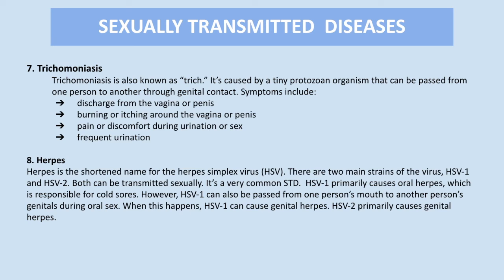HSV-1 primarily causes oral herpes, which is responsible for cold sores. However, HSV-1 can also be passed from one person's mouth to another person's genitals during oral sex — when this happens, HSV-1 can cause genital herpes. HSV-2 primarily causes genital herpes. And that's the end of our list of sexually transmitted diseases.